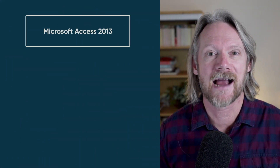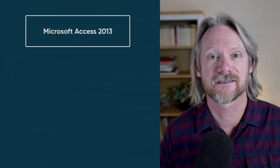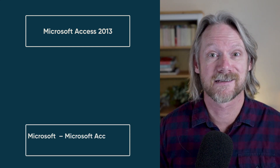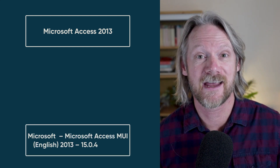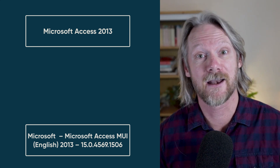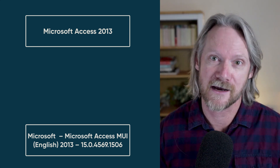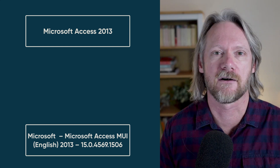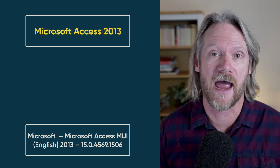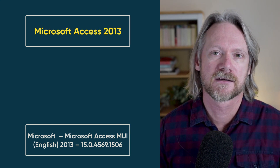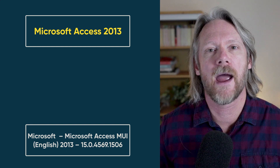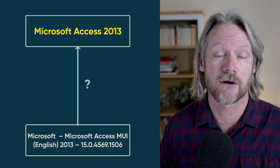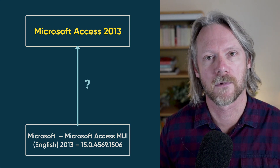For example, Microsoft Access 2013 may be recorded as "Microsoft Access MUI English 2013 15045691506", which is not the way we record the software license itself, which may just be "Microsoft Access 2013". So we need a way to reconcile this data about our installations to the standard way we record our software product models.